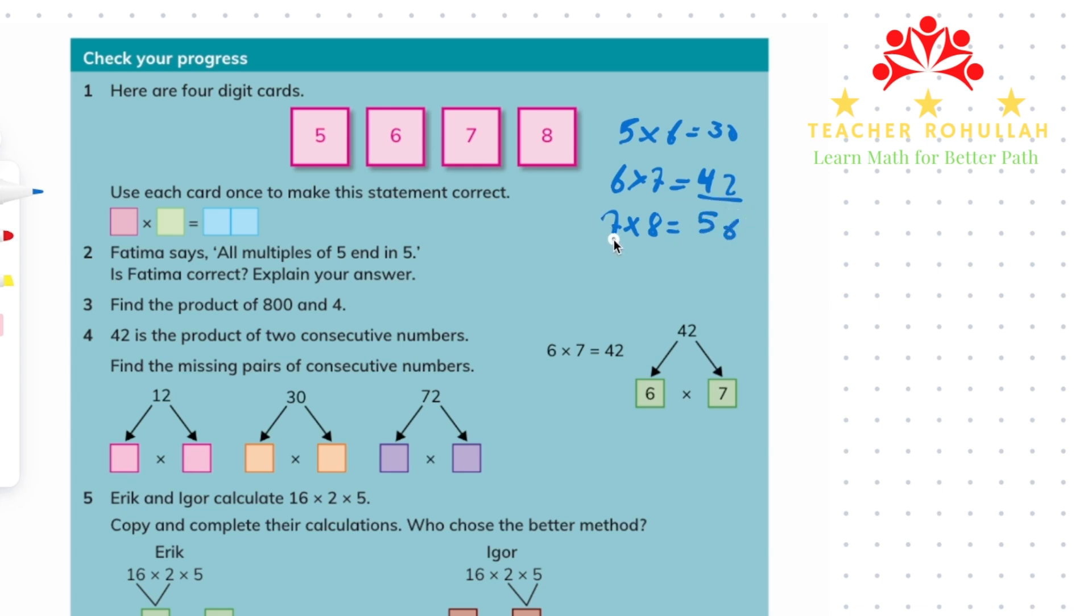So if we put seven here, eight here and we will have the place for five and six. This is the calculation that we can use to fill each box in this statement. So we can write seven here, eight here, five here and six. Seven times eight equals fifty-six.